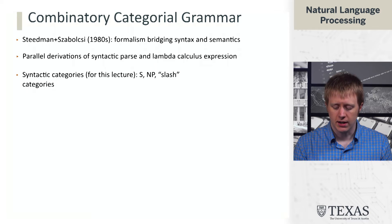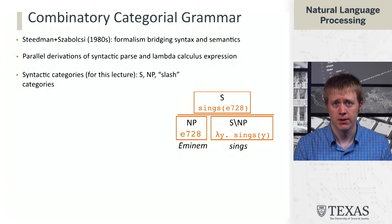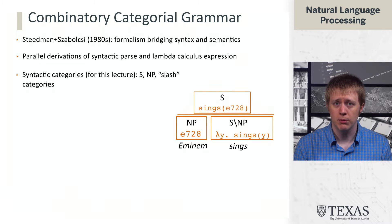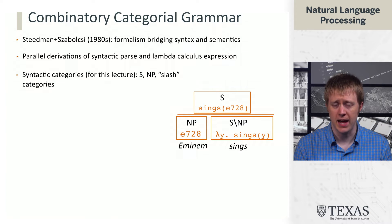We are going to see a couple of kinds of syntactic categories that are going to look a little bit different. We're going to still have S and NP, which are going to be the same as we've seen in constituency, but we're also going to have what we call slash categories. Here's an example: Eminem sings. Eminem is a noun phrase, and the whole thing is a sentence. But the way we analyze 'sings' is now no longer as a verb phrase. Instead, we define it as S back NP, where I'm going to use 'back' to refer to backslash.